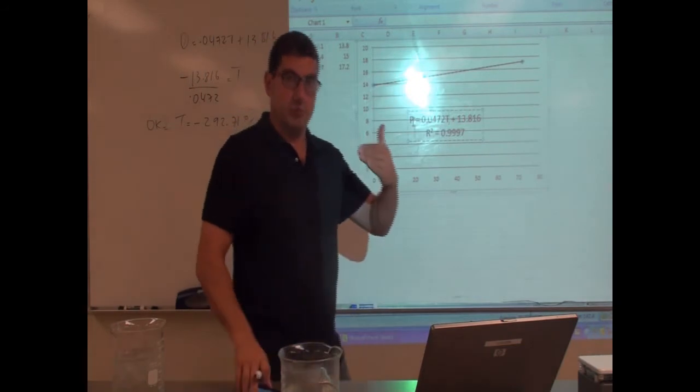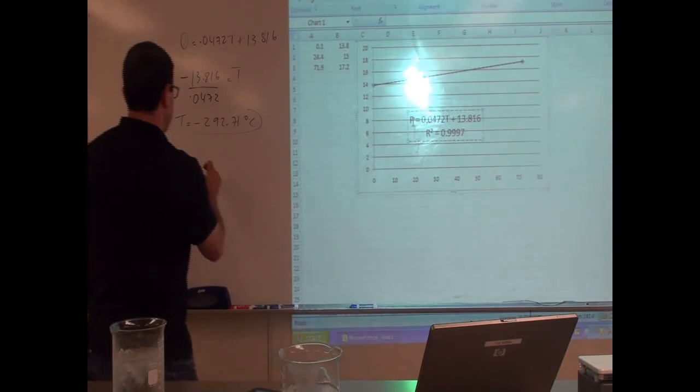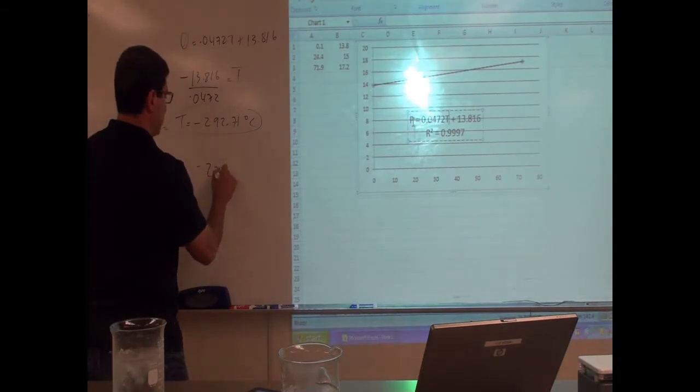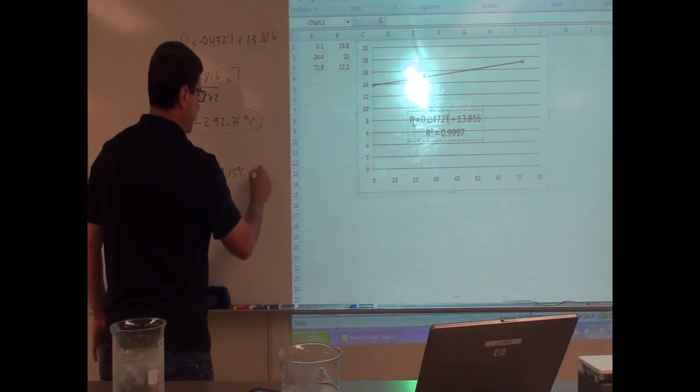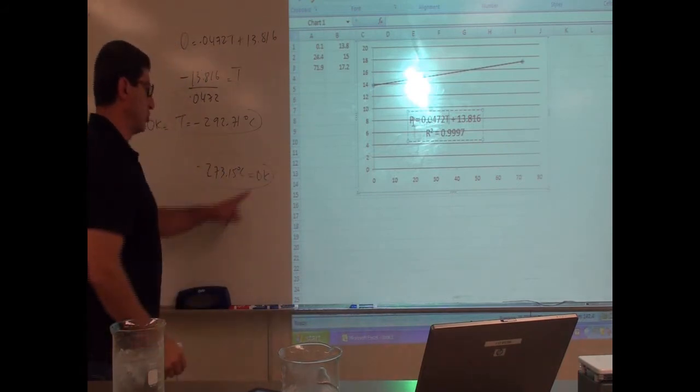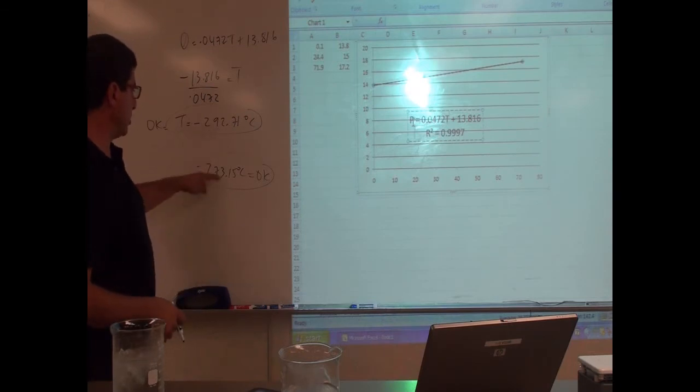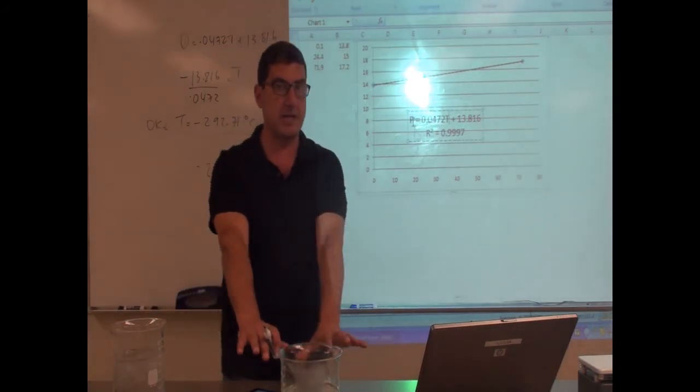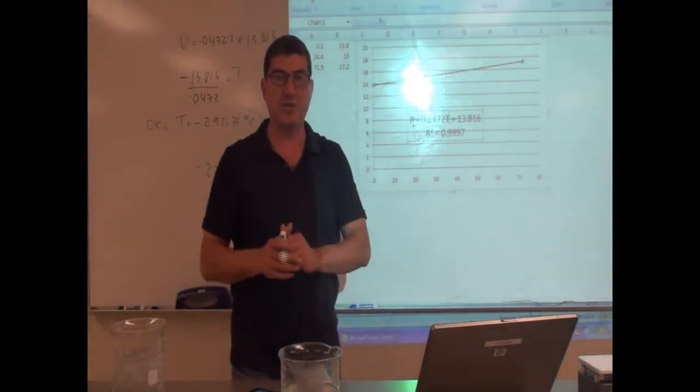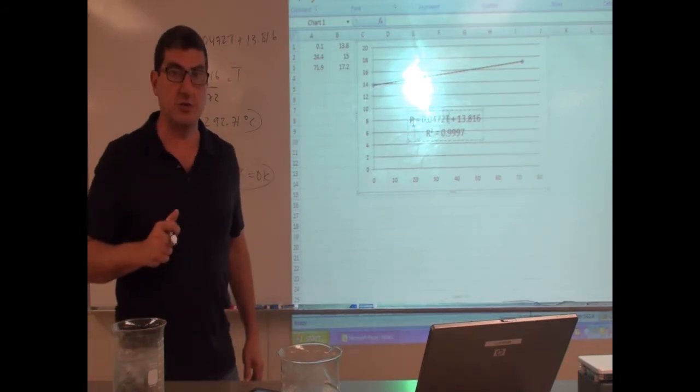Well, people that have done this experiment over and over, much more accurately, tell us that negative 273.15 Celsius is zero Kelvin. Absolute zero is equivalent to negative 273.15. I'm pretty close. I'm within 20 Celsius of that. To be using a crude experiment like this without having a digital scale, some systematic error, I'm actually really, really happy.